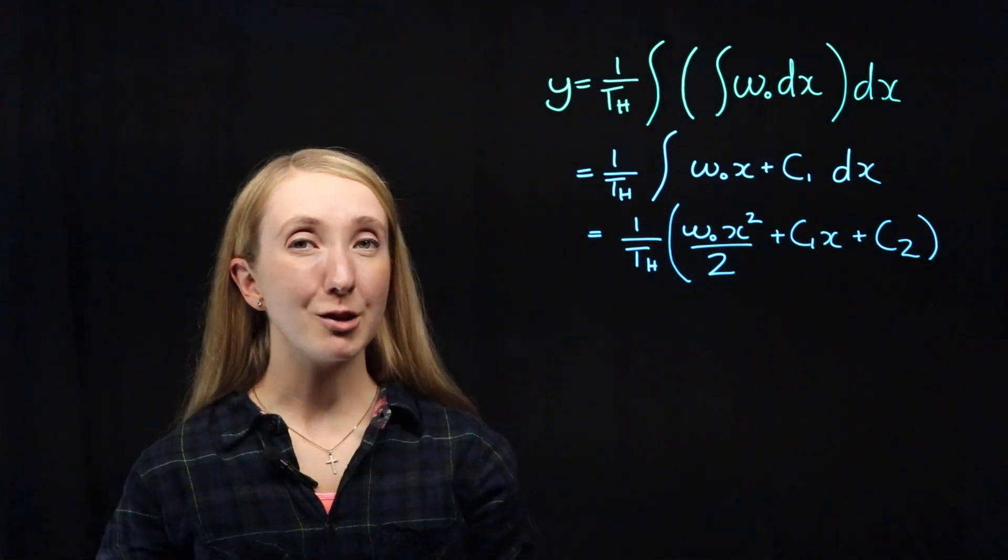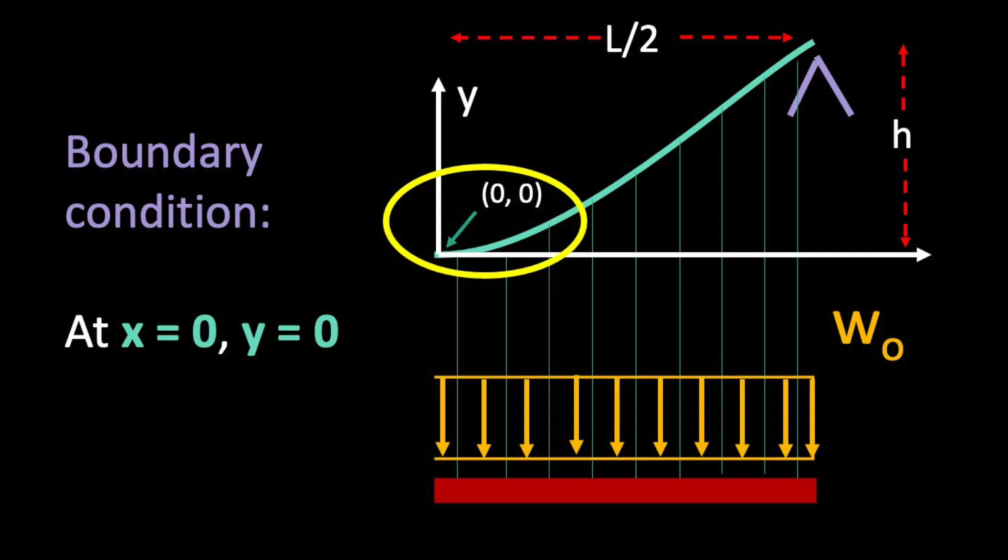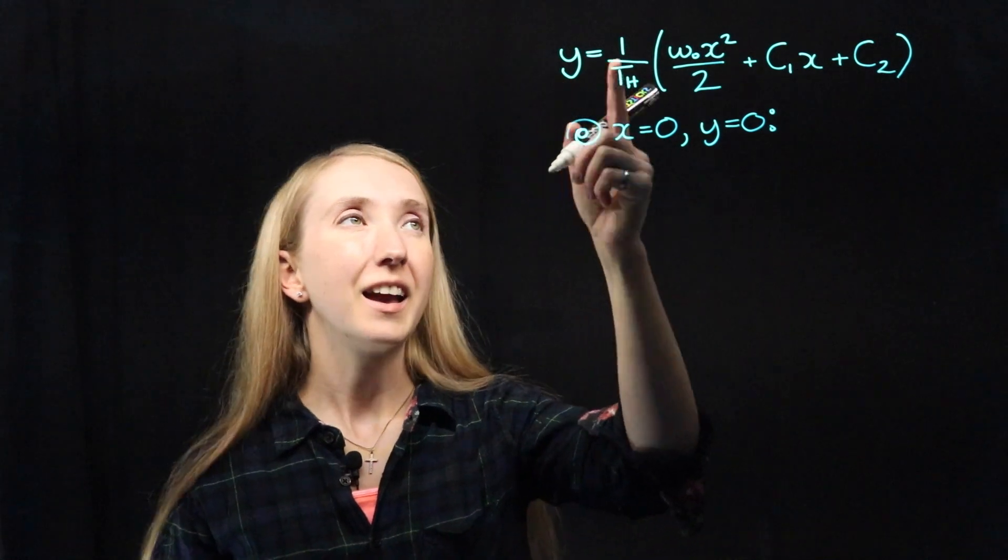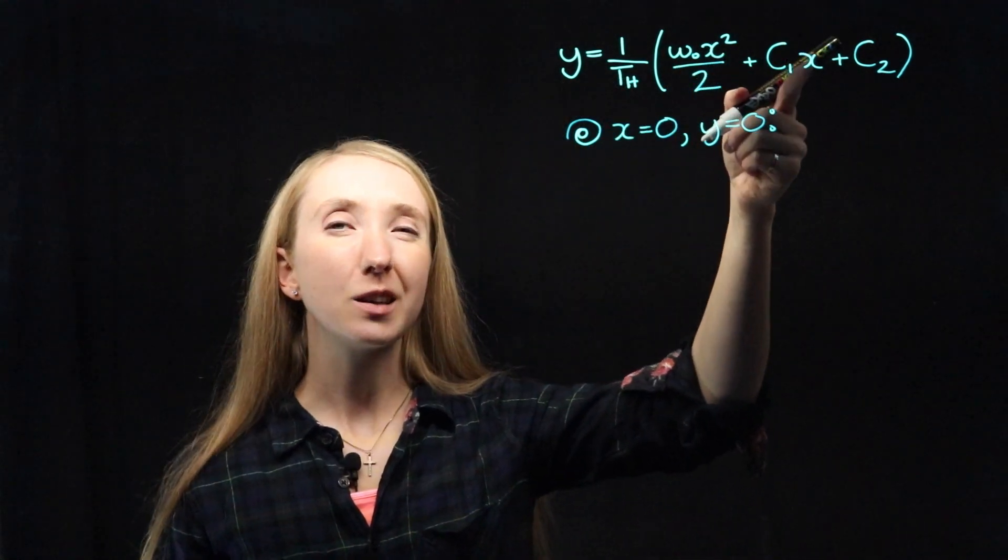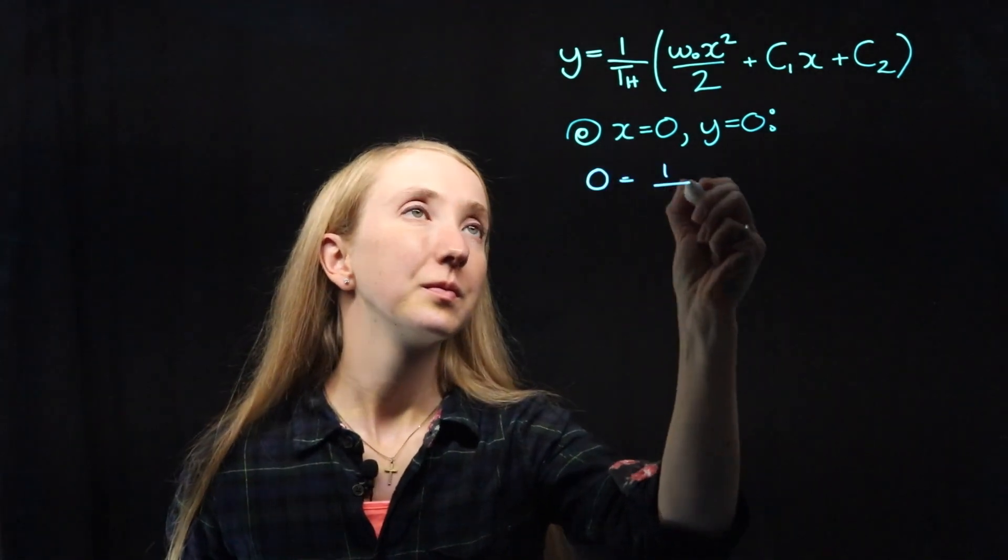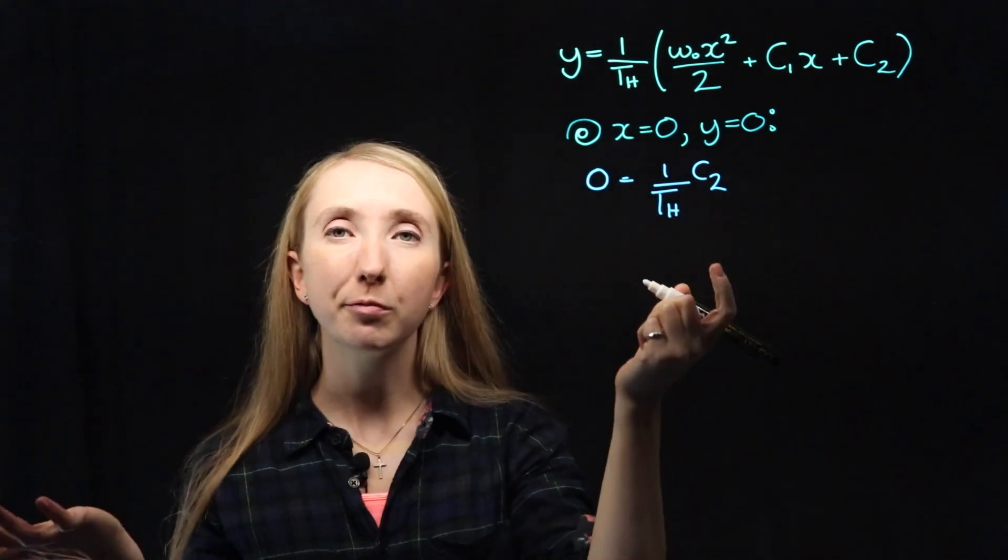Now let's look at some boundary conditions to see if we can get rid of these silly constants. Because of our fortuitous origin placement, we have a nice boundary condition at the origin of x equals zero and y equals zero. So we can plug this coordinate into our function. Our y is zero and this x and this x are also zero, which means if we simplify we get that our c2 value must equal zero.